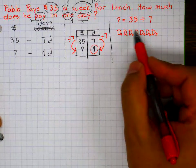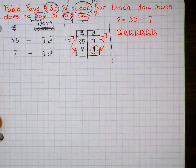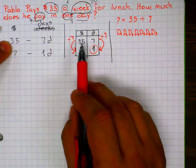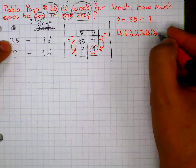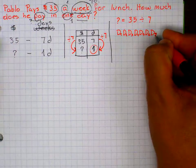I could have put Monday, Tuesday, Wednesday, Thursday, Friday, Saturday, Sunday as well. I know he pays $35. How can I share $35 in these seven days to make sure each one gets the same thing?